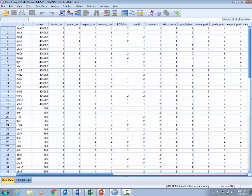There is a variable named ID. There is a variable named class. There was a variable named tense pre, grade pre, expect pre, and so forth. These are all the variables that are in this particular study.